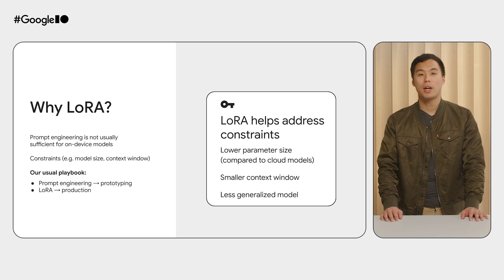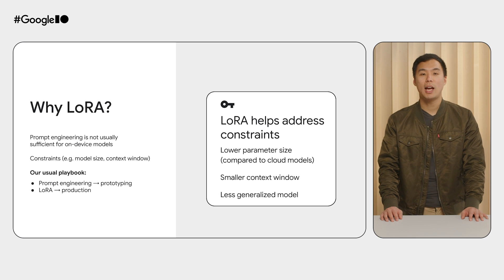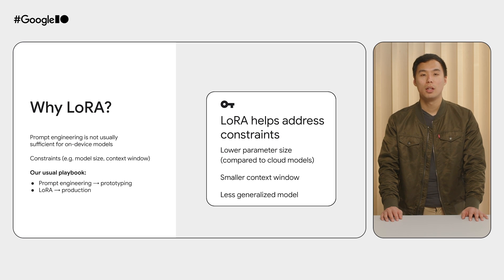So why is fine-tuning so important for on-device models when cloud models can solve many use cases out of the box with just prompt engineering? The answer lies in the constraints that on-device models face — model size and context window. Prompt engineering is not sufficient for these on-device models. LoRA fine-tuning makes it possible for a small model like Gemini Nano to excel in particular use cases, such as Smart Reply and Messaging.